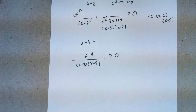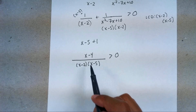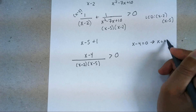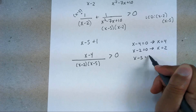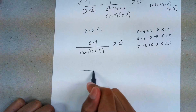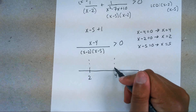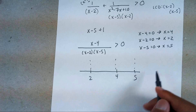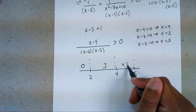Now set the top and bottom equal to zero separately. x − 4 = 0 gives x = 4. x − 2 = 0 gives x = 2. x − 5 = 0 gives x = 5. Put everything on a number line: 2, 4, 5. Then pick test points in each region — I'll use 0, 3, 4.5, and 6.